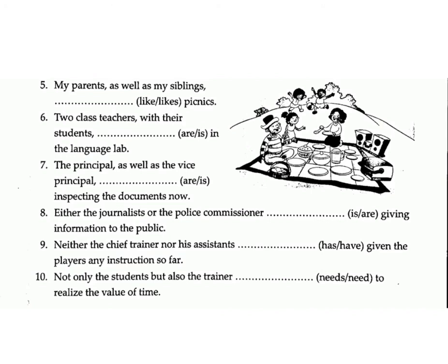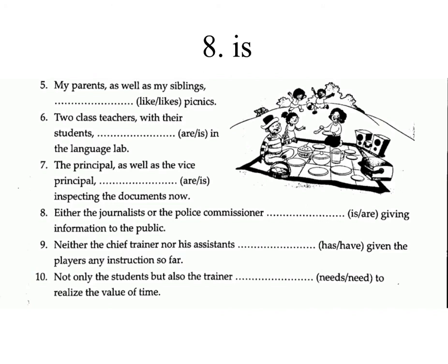6. Two class teachers, with their students, — are/is — in the language lab. Answer: are. 7. The principal, as well as the vice-principal, — are/is — inspecting the documents now. Answer: is. 8. Neither the chief trainer nor his assistants — has/have — given the players any instruction so far. Answer: have.